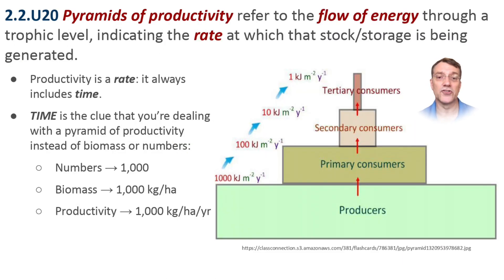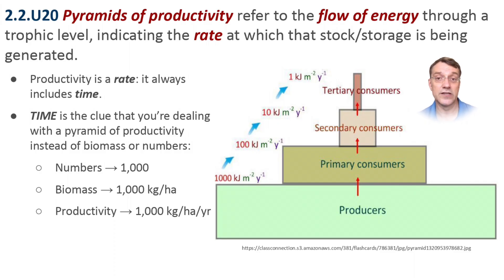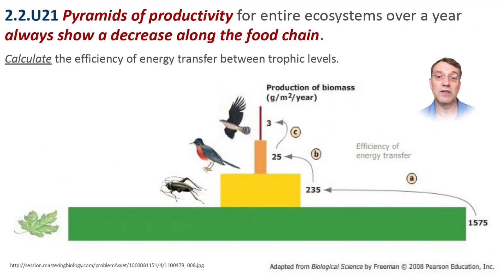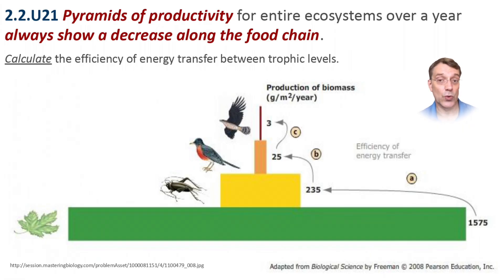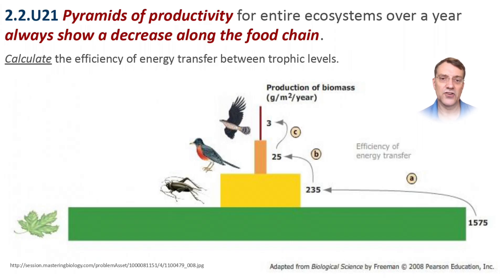Pyramids of productivity show the flow of energy through each trophic level — that's the rate at which biomass is generated. You can identify these by the time component in their units, such as kilos per hectare per year or grams per square meter per year. Unlike biomass pyramids, productivity pyramids for entire ecosystems over a year always show a decrease along the food chain. In this example, of the 1,575 grams per square meter per year produced by plants, only 235 grams per square meter per year becomes herbivore biomass — an efficiency of about 15%, relatively close to the 10% rule.